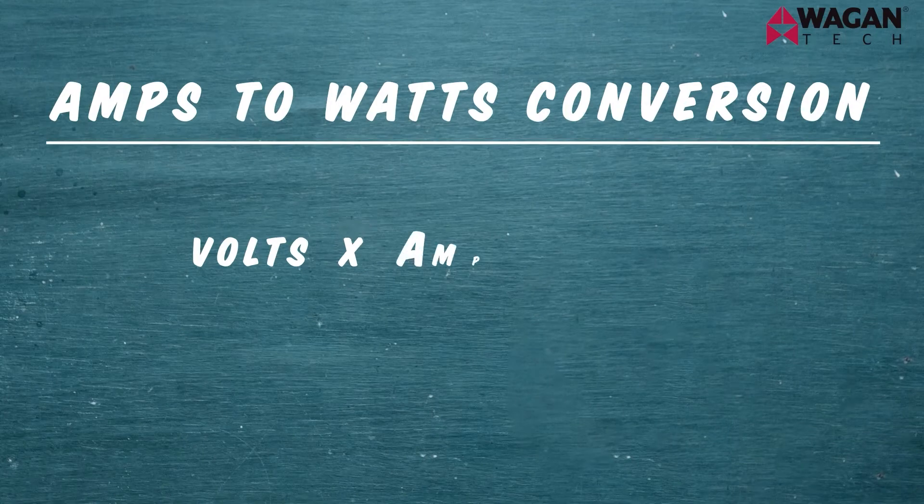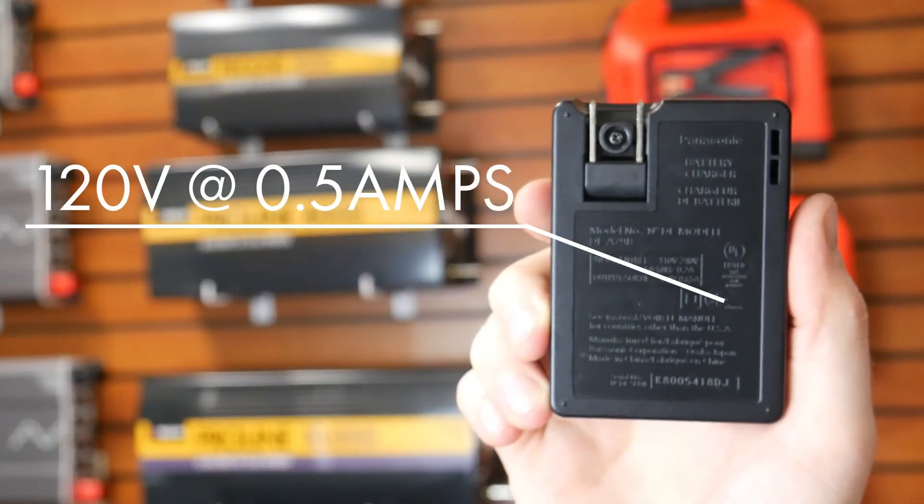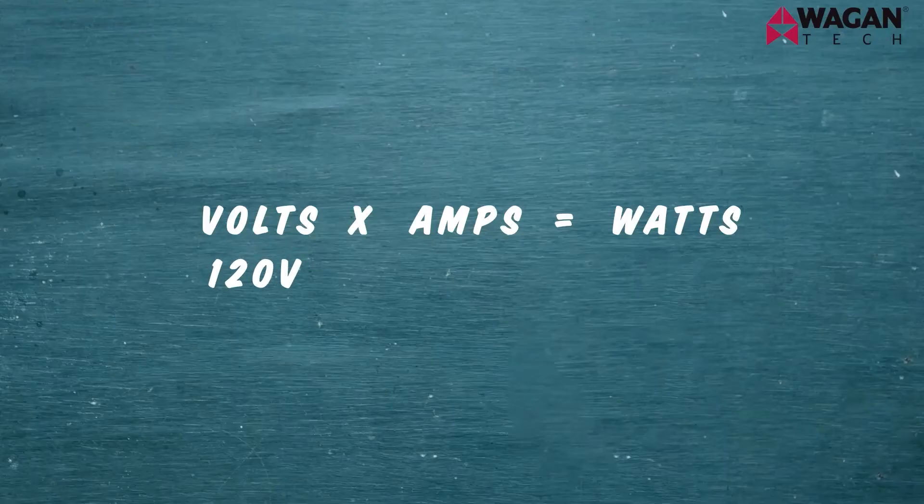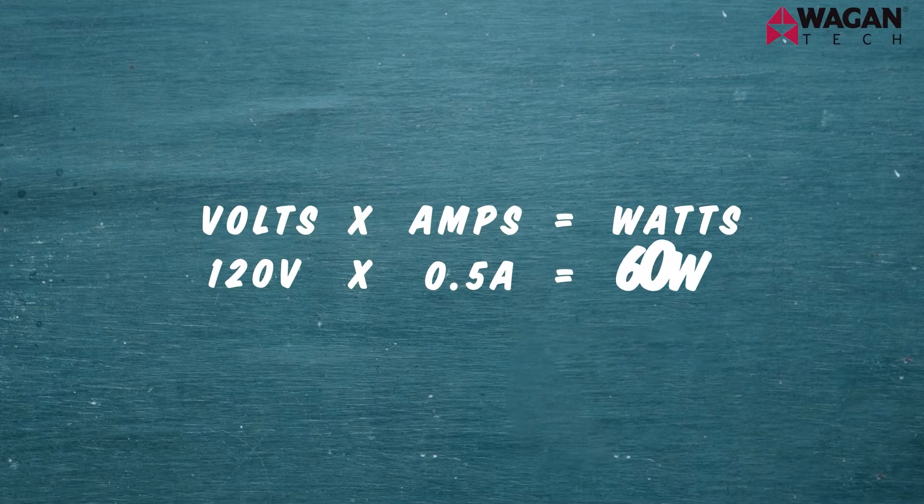Now that you have a basic understanding of modified and pure sine waves, you're probably asking: what inverter do I need? You need to look at the wattage requirements of your appliance. Most devices will have the wattage or amperage posted on the device itself. If your device doesn't list the wattage, here's how you calculate it: volts times amps equals watts. For example, a camera battery charger that says 120 volts at 0.5 amps gives you 120 × 0.5 = 60 watts.